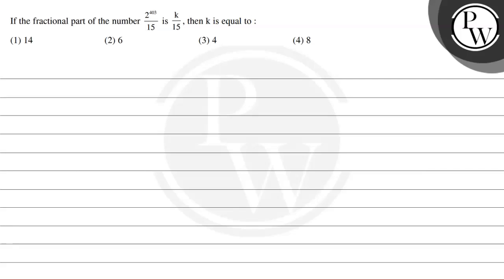Hello, let's read the given question. The question states that if the fractional part of the number 2 to the power 403 divided by 15 is k divided by 15, then k is equal to: option 1 is 14, option 2 is 6, option 3 is 4, and option 4 is 8.